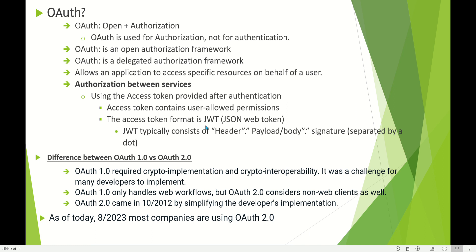The access token format can be JWT. We will discuss more on OAuth versus JWT in the next slide. Before that, let's see the difference between OAuth 1.0 versus OAuth 2.0. OAuth 1.0 required crypto implementation and crypto interoperability, which was a challenge for many developers to implement. It also only handled web workflows. OAuth 2.0 considers non-web clients as well. OAuth 2.0 came around 2012 by simplifying developer implementation. As of today, most companies are using OAuth 2.0.